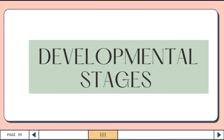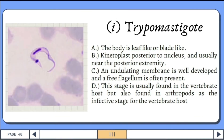The developmental stages: The first is the trypomastigote. The body is leaf-like or blade-like, and the kinetoplast is posterior to the nucleus and usually near the posterior extremity. An undulating membrane is well-developed and a free flagellum is often present. This stage is usually found in the vertebrate host but also found in arthropods as the infective stage.